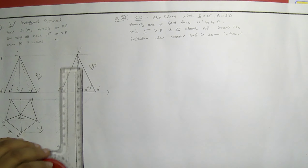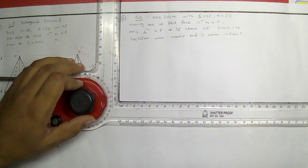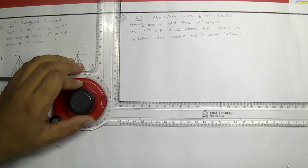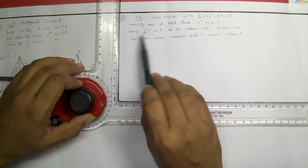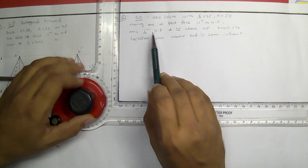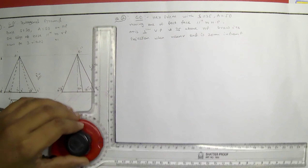For this condition we have to draw all 3 views. Let us start the problem here. I will be starting the problem taking the front view as a hexagonal prism that falls on VP, because axis is perpendicular to VP means the base is automatically parallel to the VP.